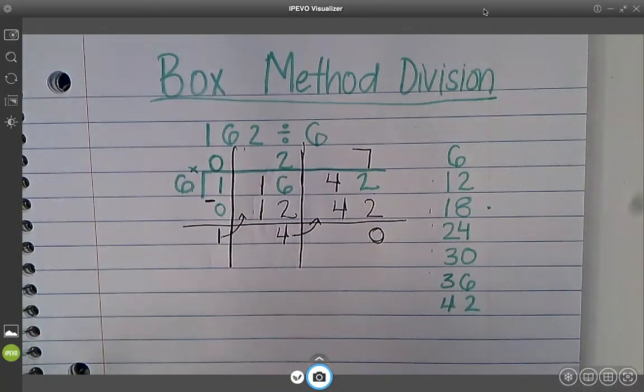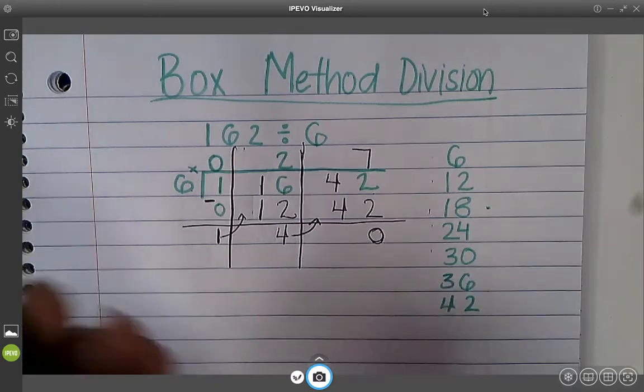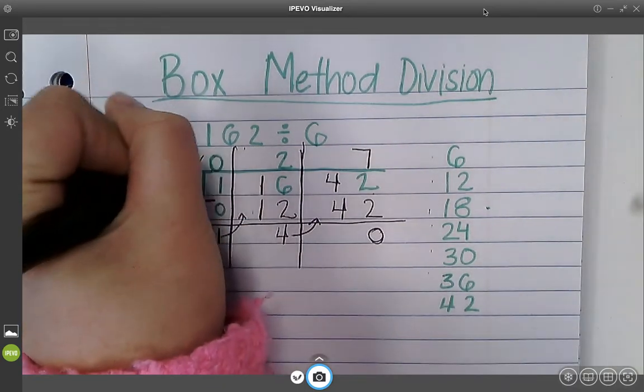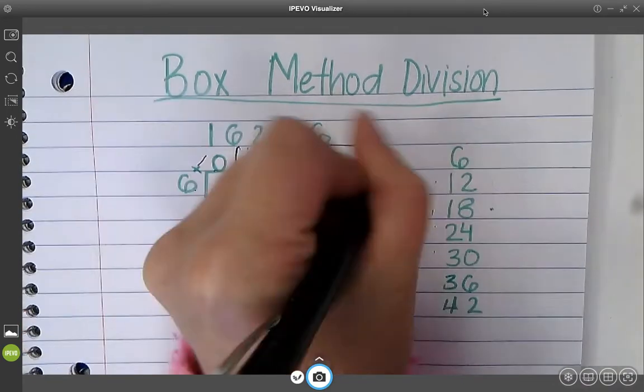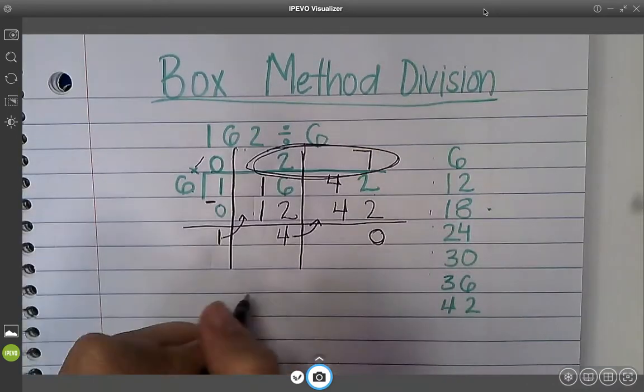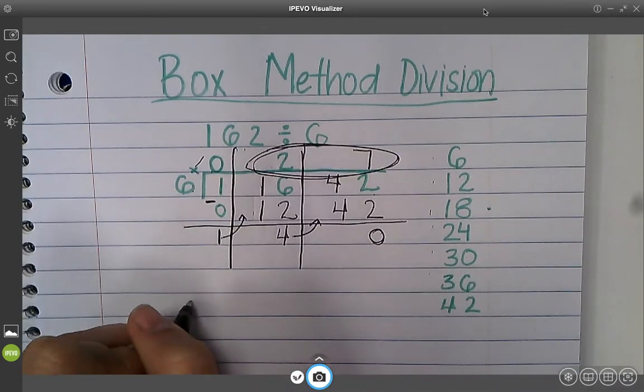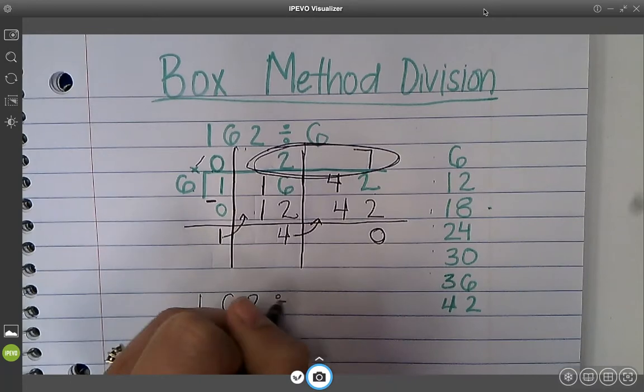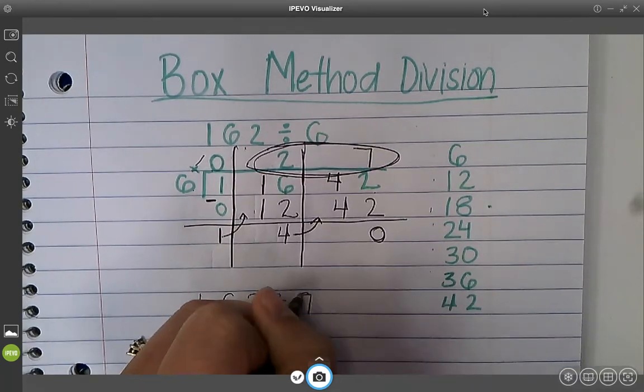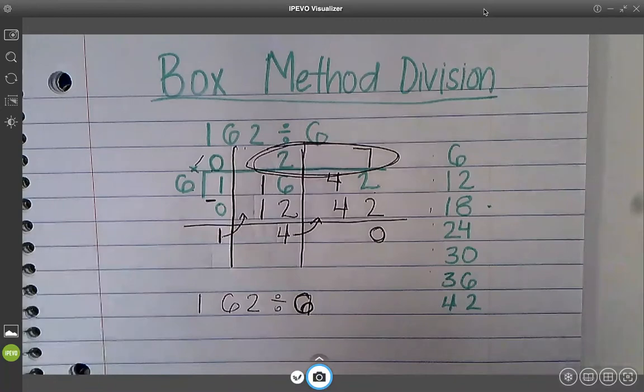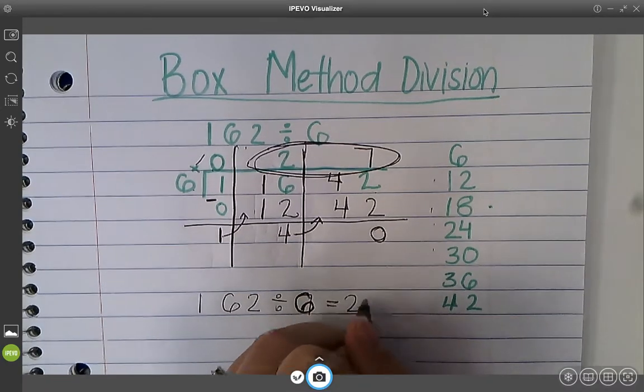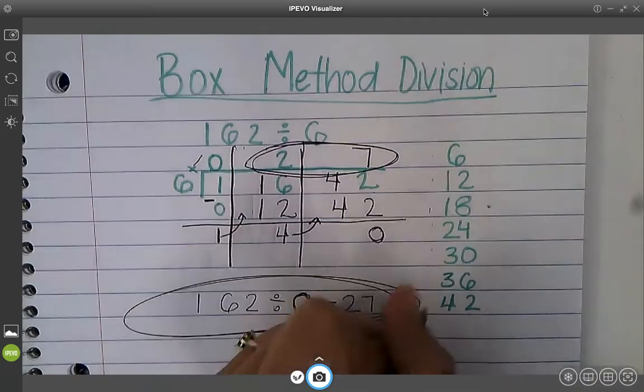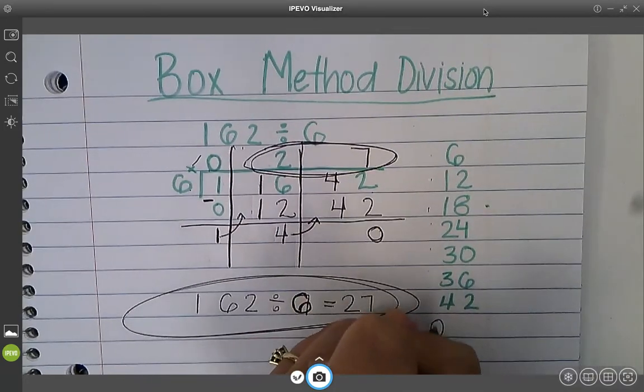42. I have nothing left over. So my answer is not 027. We can get rid of this only if it's in the front. And my answer for quotient is 27. So 162 divided by 6. Oopsies. Divided by 6 equals 27.